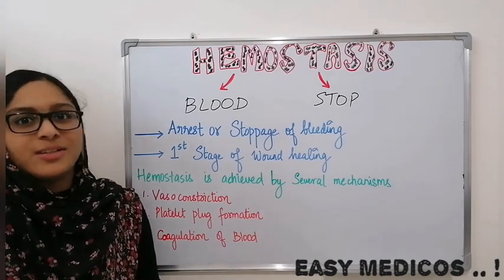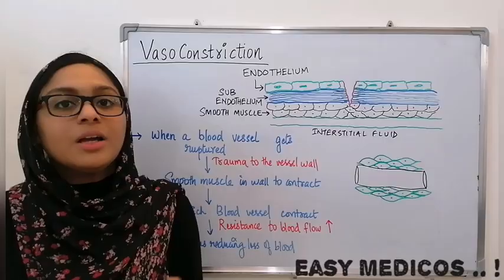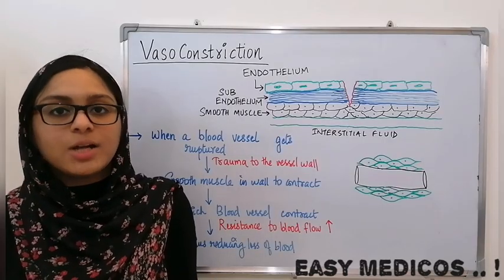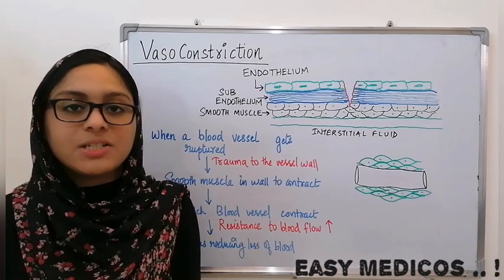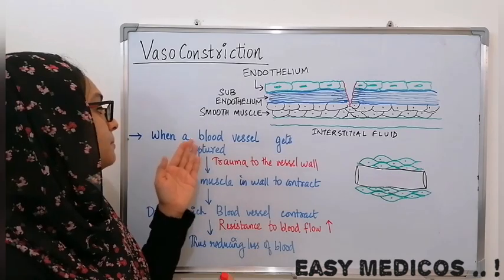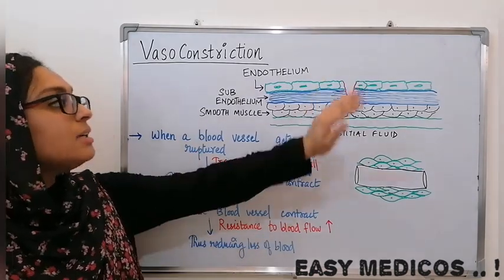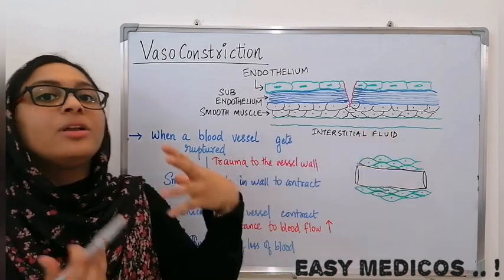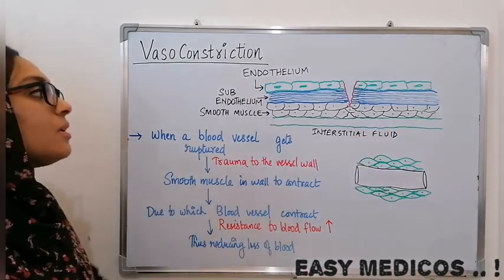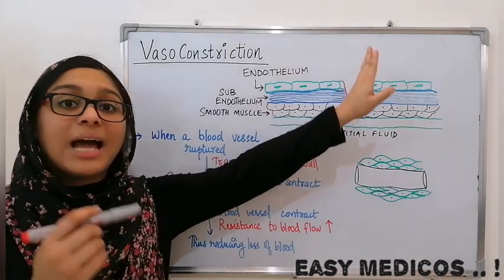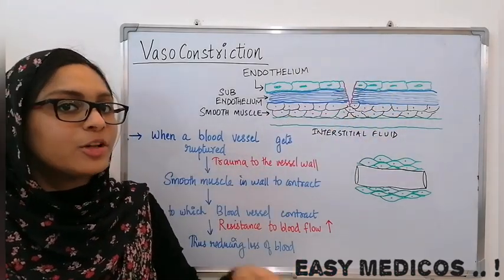That is Vasoconstriction. What is Vasoconstriction? When we come to the wound, we come to the damage of blood vessels. It is a ruptured blood vessel. This is damage of the endothelium — this is the endothelium, and it is scraped off.